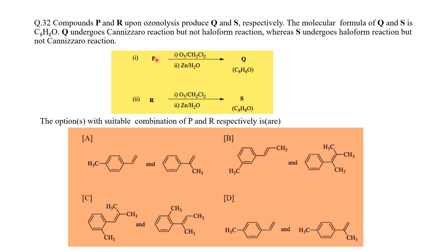In this question, we have two starting materials. The same ozonolysis reaction is done on each starting material, and they have given one of the products in both cases — both products have the same molecular formula. But they are not the same product, because one undergoes Cannizzaro reaction while the other undergoes haloform reaction. We are supposed to find which combination of the given options could be a suitable combination for P and R.